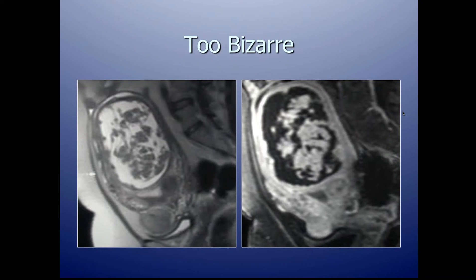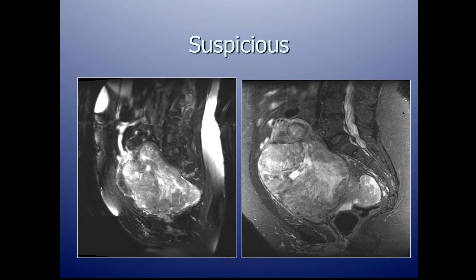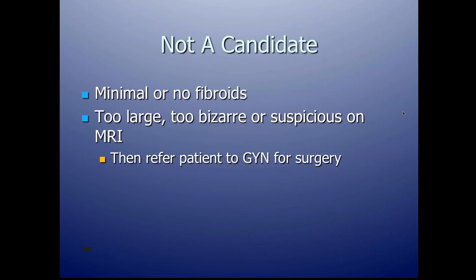Sometimes MRIs have what we call a very bizarre appearance — something that just doesn't look right — and we think the patient should probably have surgery. Sometimes there's a very suspicious-looking case; although uterine cancer is very uncommon, it does happen, and we use the MRI to assess that possibility. So patients with minimal or no fibroids, or fibroids that are too large, too bizarre, or suspicious, are referred back to a gynecologist, generally for surgery.